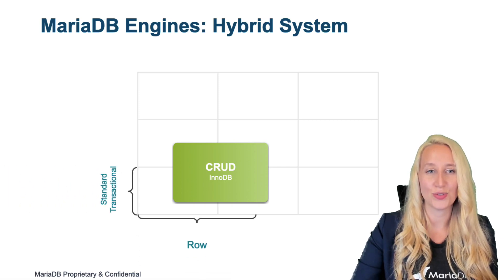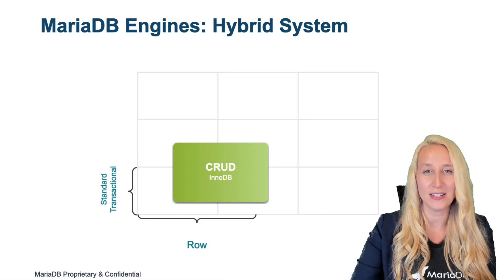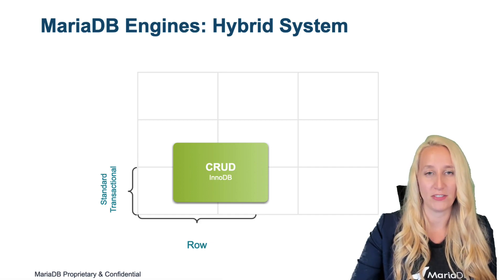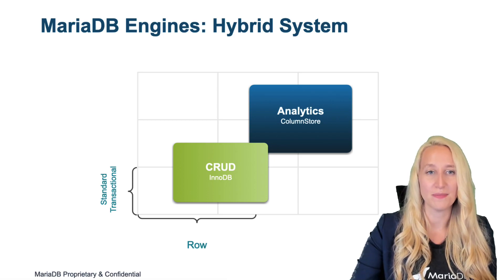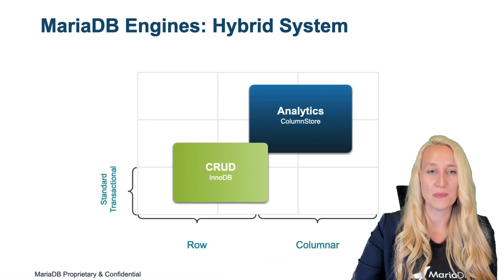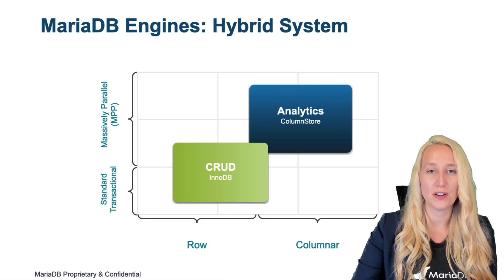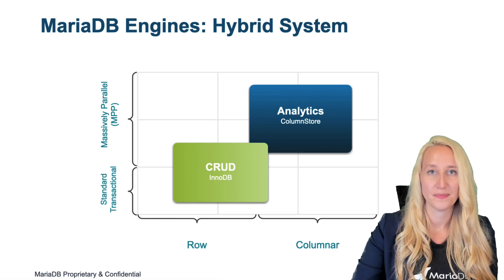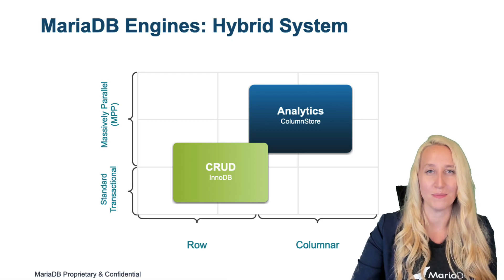InnoDB is stored as rows on disk. For query performance, you need to add additional indexes, which are stored separately from the table-level data to improve performance. For analytics, ColumnStore is actually column-based, which means that the data is stored in columns so that it is easier and faster to retrieve. It also has massively parallel processing, so it's able to crunch through very large analytical queries at a much higher speed. You'll also notice that ColumnStore does not require indexes, because in essence every column is its own index.